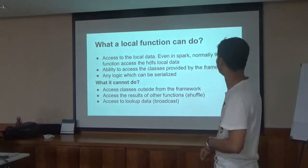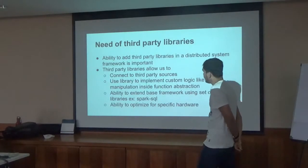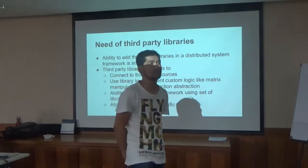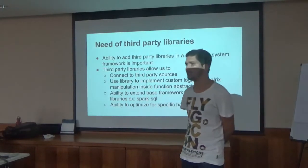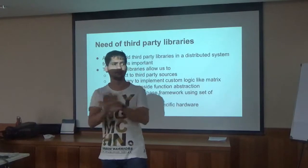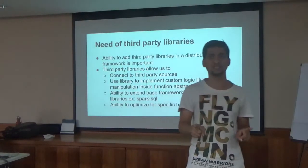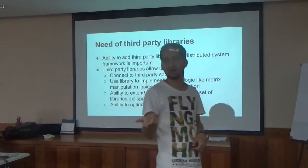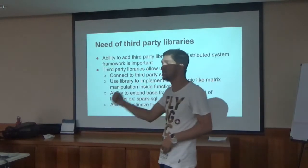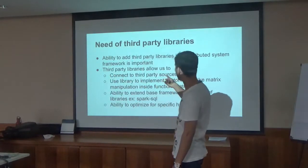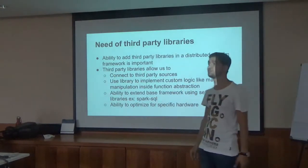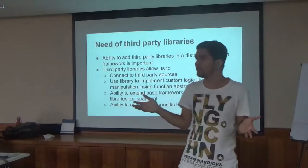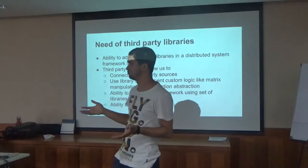In our session we are going to look at the first point: how to access third-party libraries using our framework and how we do it. It is very similar to how Spark does it. When Spark started, these things were straightforward. Why do we need third-party libraries? If I want to do it in a normal setup, it's very easy — just put it in the classpath. But in a distributed system, wherever the executor runs, you need to add that to the classpath. The first reason we need third-party libraries is to connect to third-party sources — for example, if you want to connect to MongoDB, you need to give the jar.